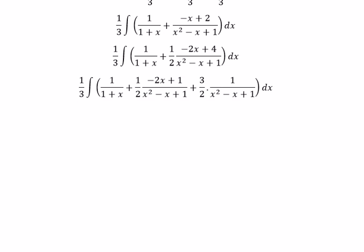Now about the first fraction we will get 1 over 3 multiplied by ln of the absolute value of 1 plus x. For the second fraction we can get negative ln of the absolute value of x squared minus x plus 1.